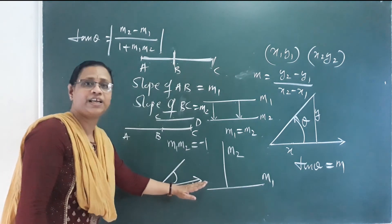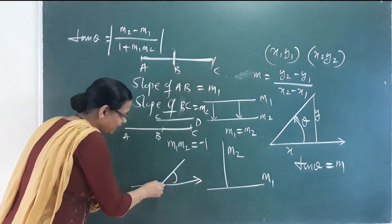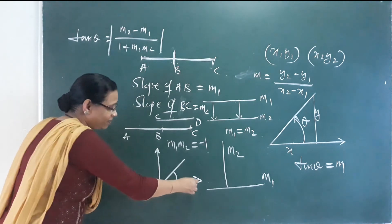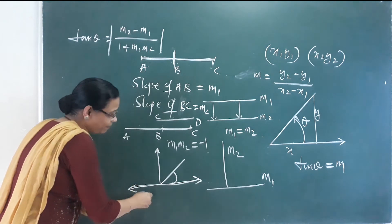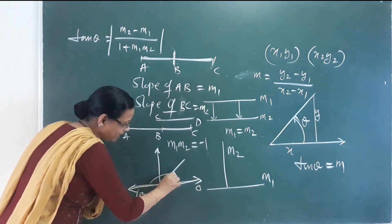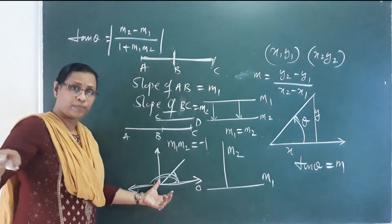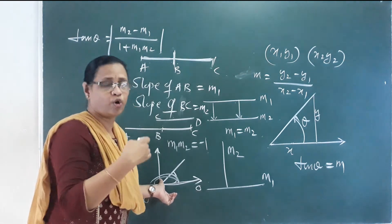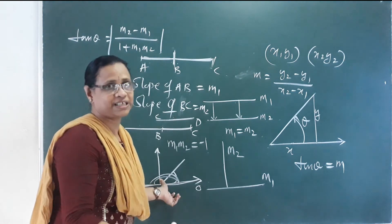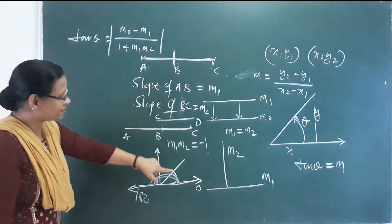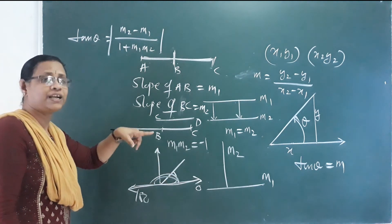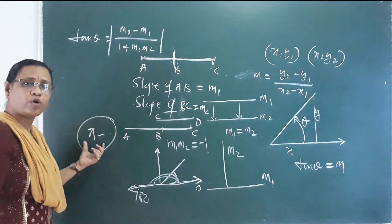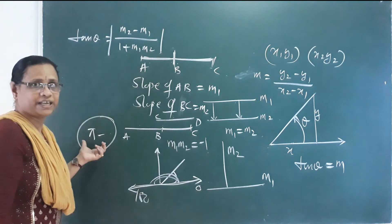If the slope is at 90 degrees, it is not defined. The slope ranges from 0 to 180 degrees, but is undefined at 90 degrees. To find the formula for an acute angle, it equals pi minus the angle if in the second quadrant. We find the slope accordingly.